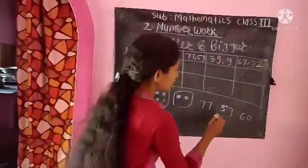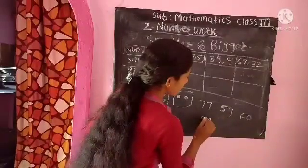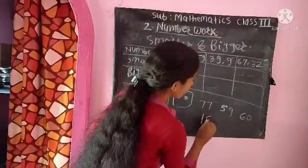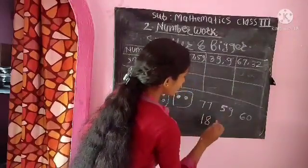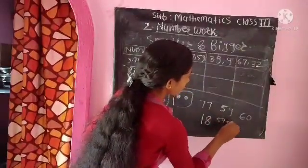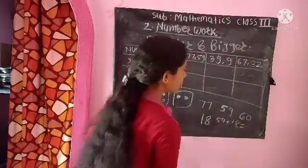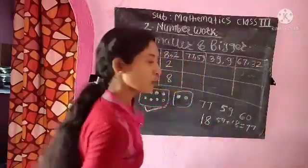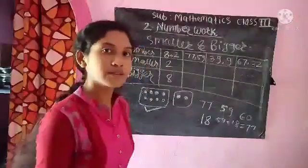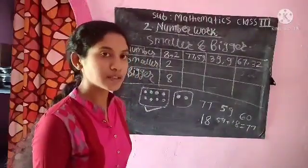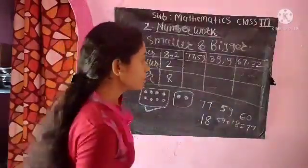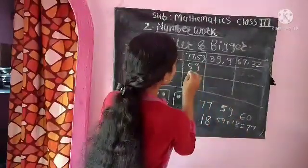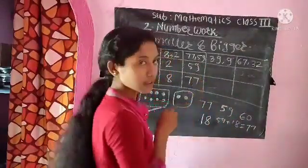So we add 59 plus 18, then we get 77. Which number is bigger and which number is smaller? Obviously, 59 is the smaller number and 77 is the bigger number.